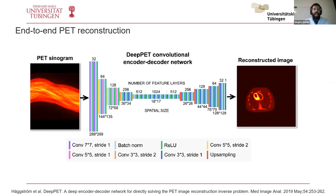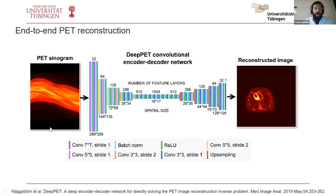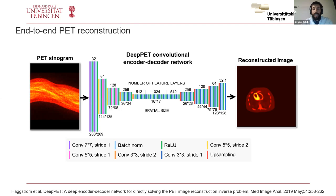The last technical slide combines everything described before: recovering PET images directly from raw data — the PET sinogram. The deep neural network takes the raw sinogram as input and, through an encoder-decoder structure, recovers the reconstructed PET image. Training is performed with pairs of raw data and traditionally reconstructed data. The algorithm learns the entire process of reconstruction, attenuation correction, and image formation end-to-end. This is quite impressive and we will see more studies on this.